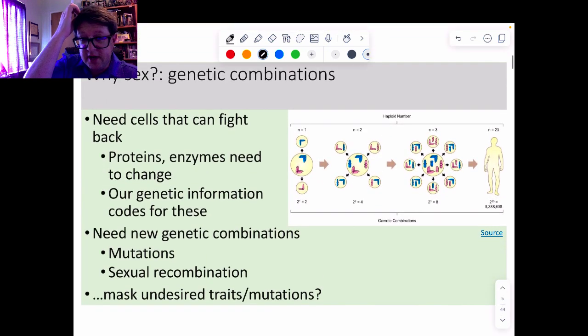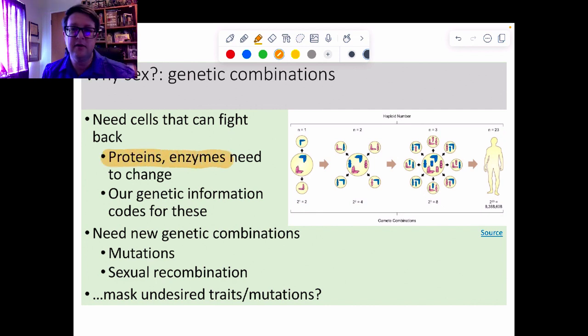Sexual reproduction gives us the opportunity to fight back. The way it does this is our proteins and enzymes need to be something a little bit different, because clearly if they broke in to our cells, they had the right keys to get in. So we need our genetic information that tells how to make these proteins and these enzymes to change too.